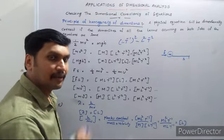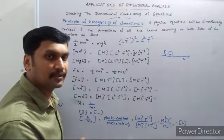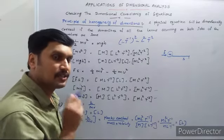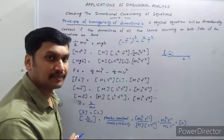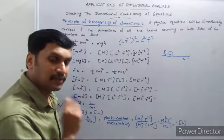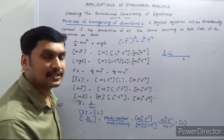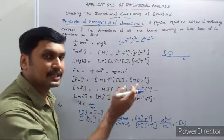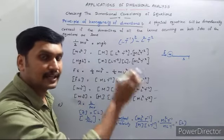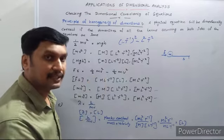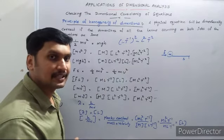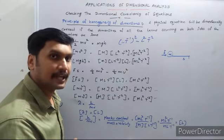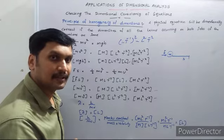By using this principle of homogeneity, we check the dimensional consistency of an equation. If the equation is dimensionally correct, all the terms on the left side and right side should have the same dimensions. That principle is known as the homogeneity principle of dimensions. That's all for today. Thank you.